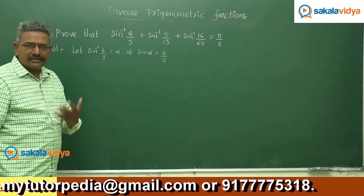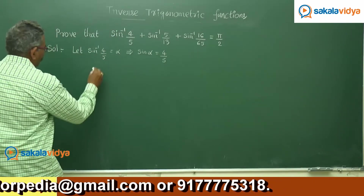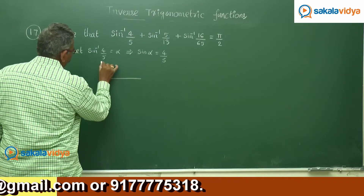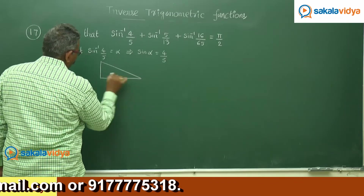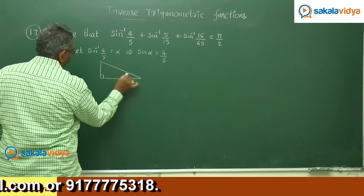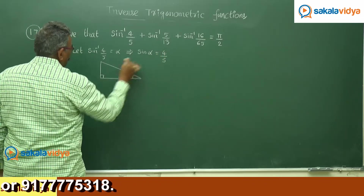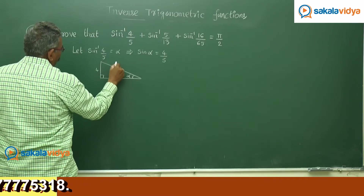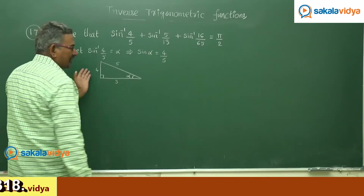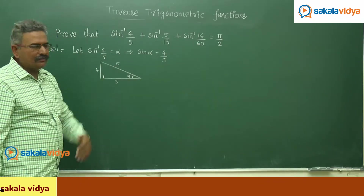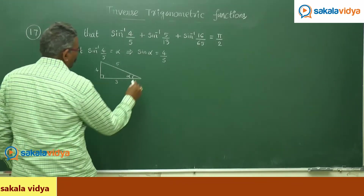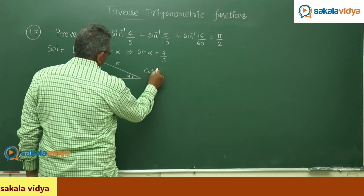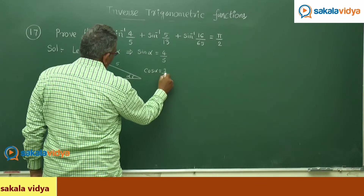Let us consider a right angle triangle. As per the definition, this is a 3-4-5 right triangle — the sides are 4, 5, and 3. We know the Pythagorean triple. So cos alpha equals 3/5.